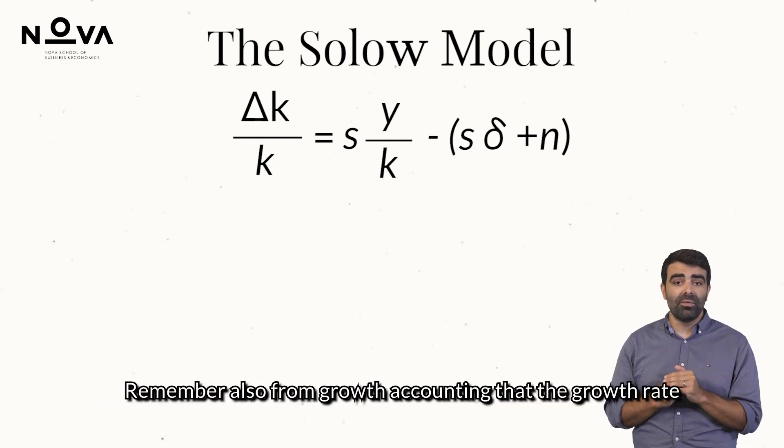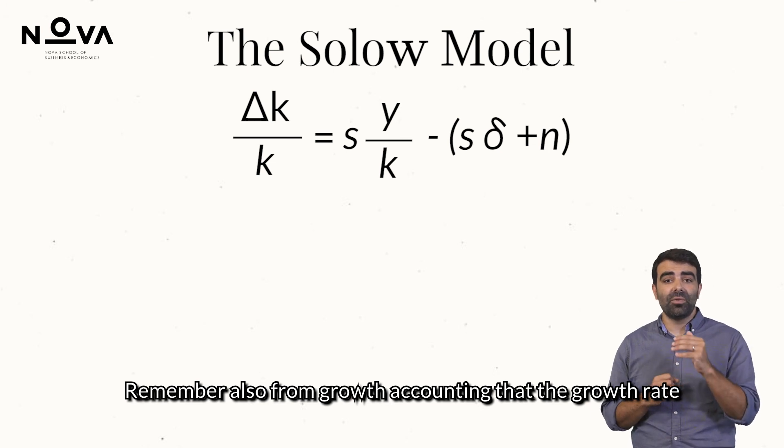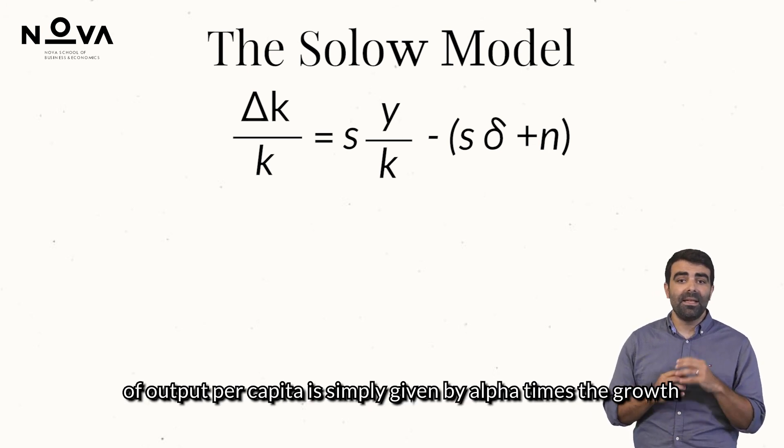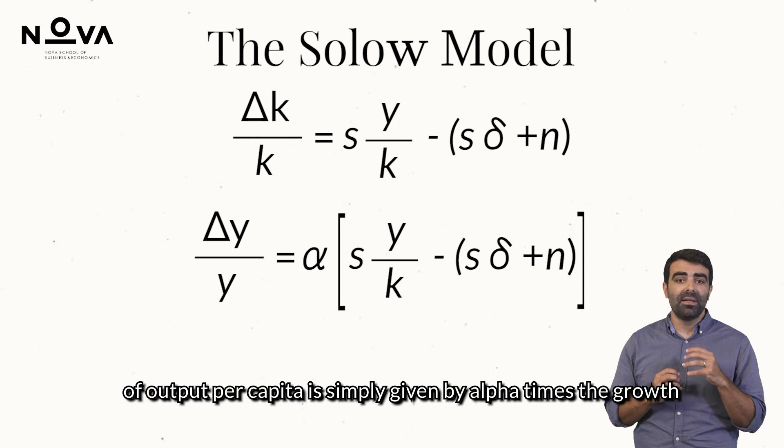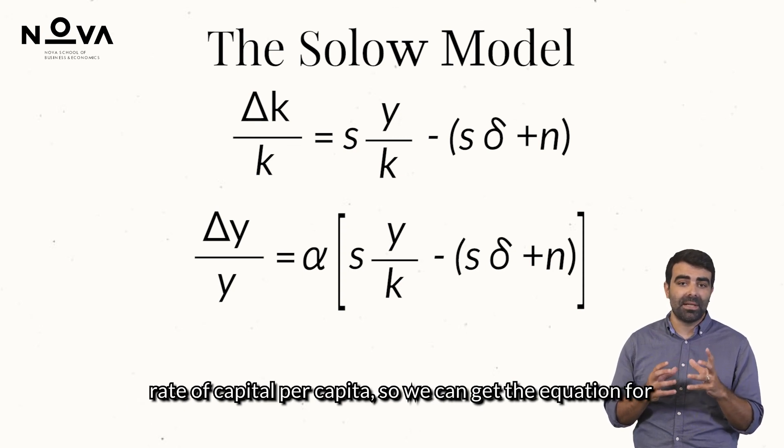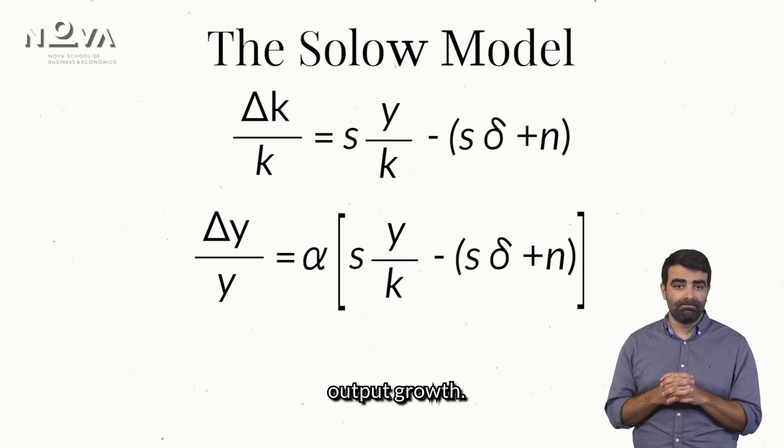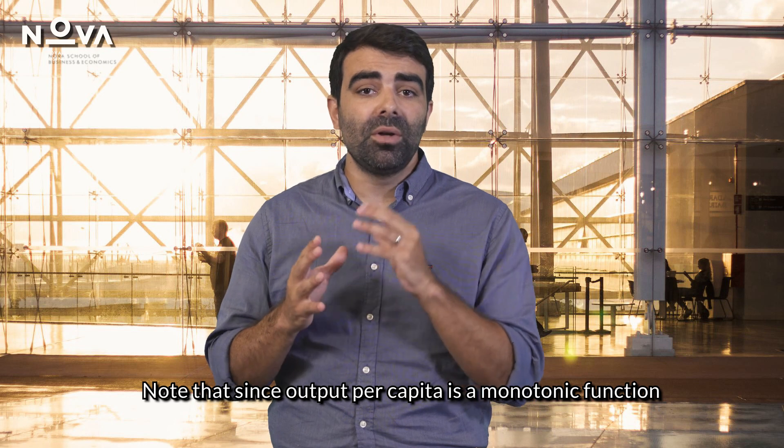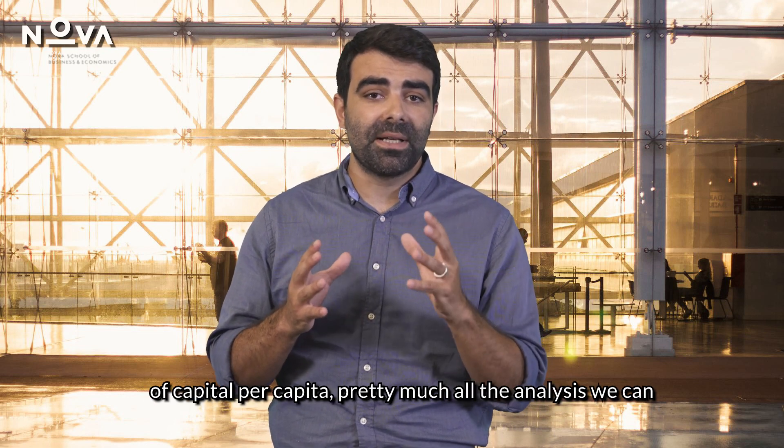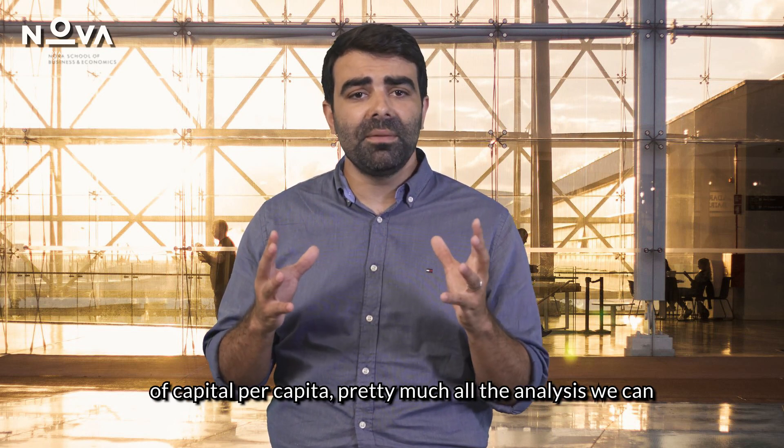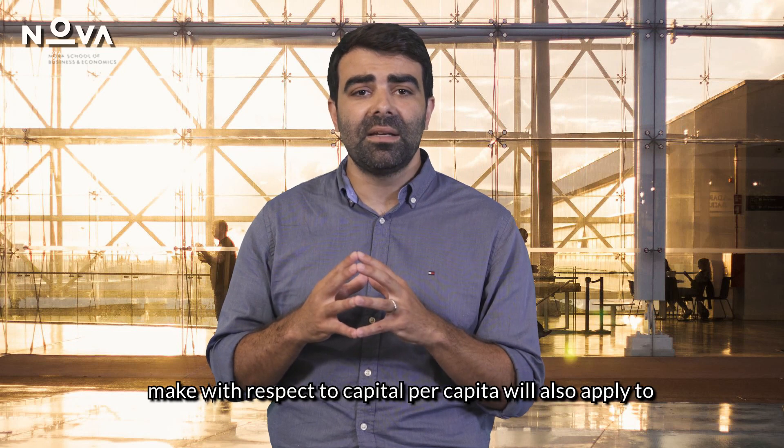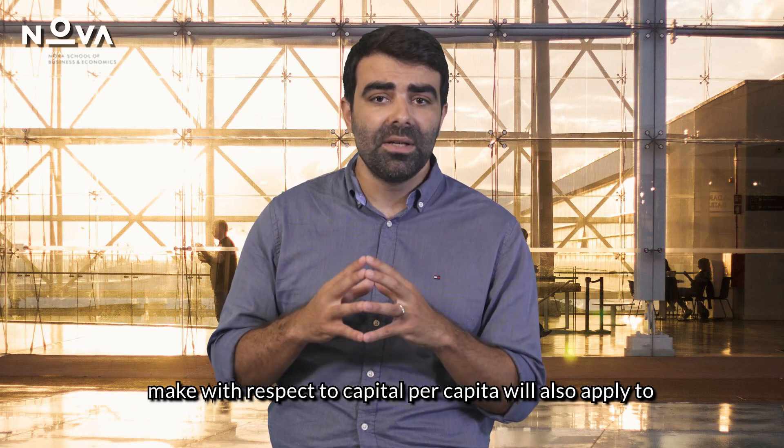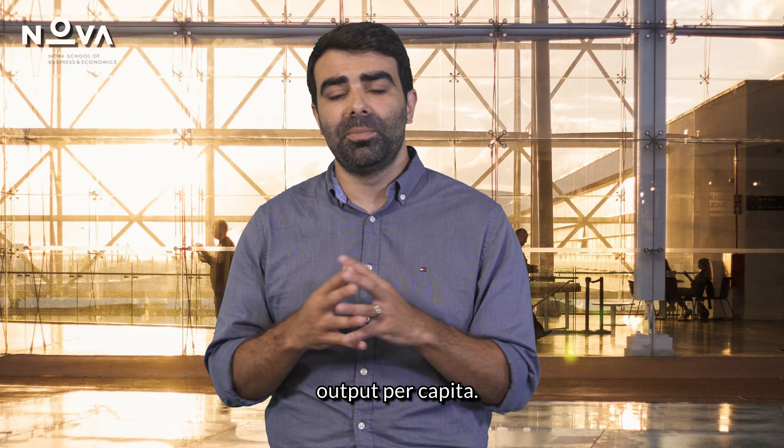Remember also from growth accounting that the growth rate of output per capita is simply given by alpha times the growth rate of capital per capita so we can get the equation for output growth. Note that since output per capita is a monotonic function of capital per capita, pretty much all the analysis we can make with respect to capital per capita will also apply to output per capita.